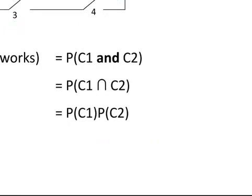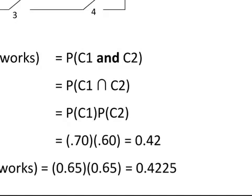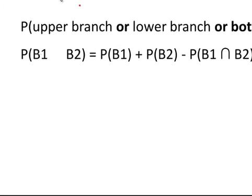We're going to continue from that. So the next part is, what is the probability that the upper branch or the lower branch or both work? So this is the probability that it can go through the upper branch, plus the probability that it can go through the lower branch, minus the probability that both branches are open.